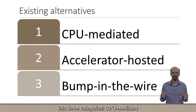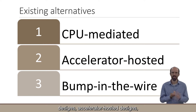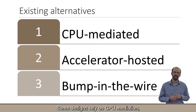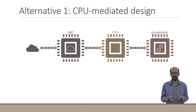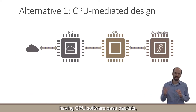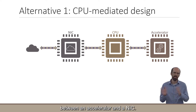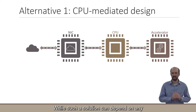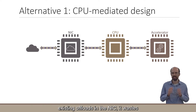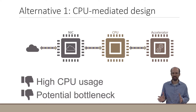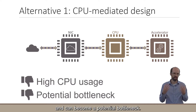We can divide existing solutions into three categories: CPU-mediated designs, accelerator-hosted designs, and bump-in-the-wire designs. Some designs rely on CPU mediation, having CPU software pass packets, messages, or even metadata between an accelerator and a NIC. While such a solution can depend on any existing offload in the NIC, it wastes precious CPU cycles on data transfers and can become a potential bottleneck.